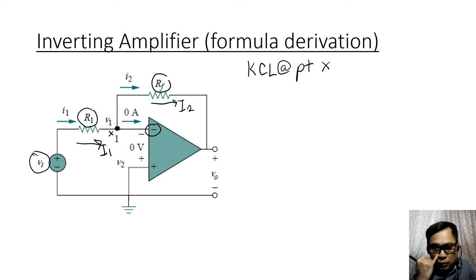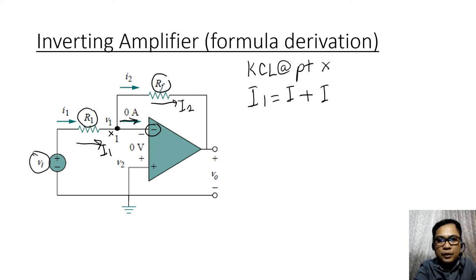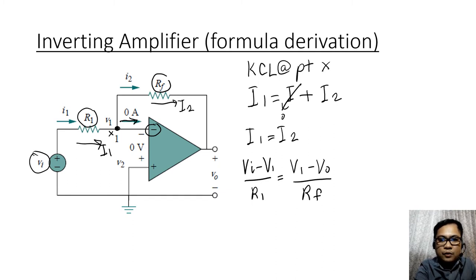So with this, summation current entering is equal to summation current leaving. That is, i1 is equivalent to i, the current here, plus i2. Note that i from our previous rules is that this is equivalent to zero. So this is just equal to i1 is equal to i2. Now replace that with the Ohm's law equivalent.